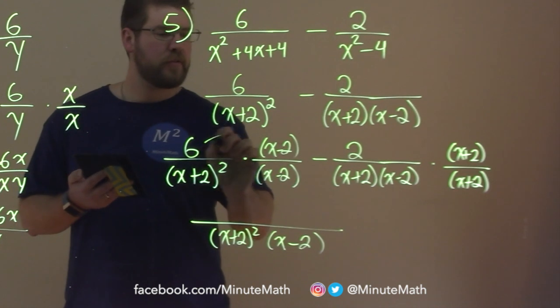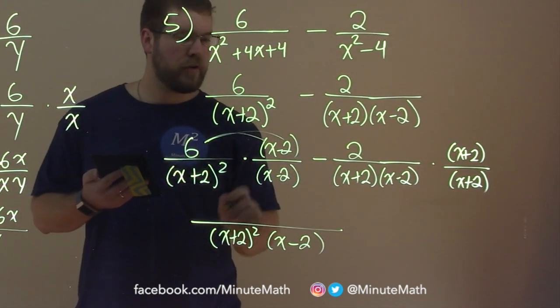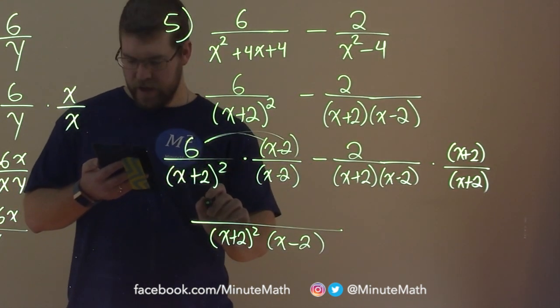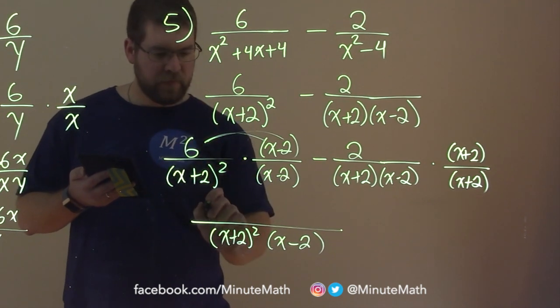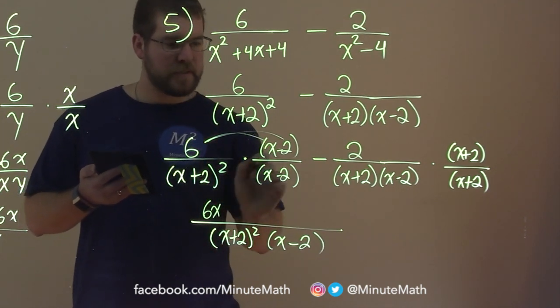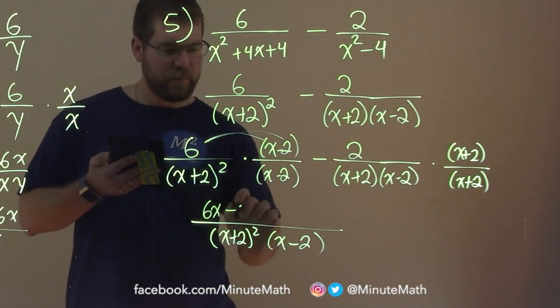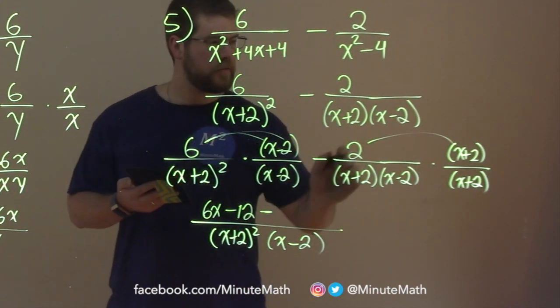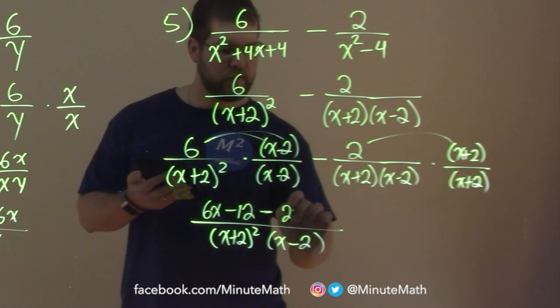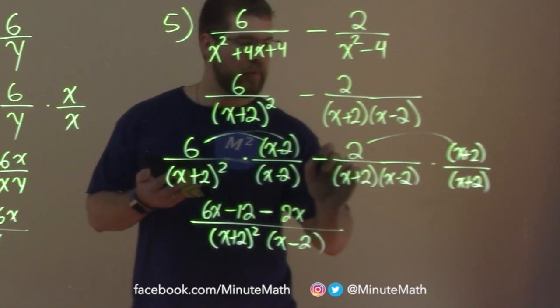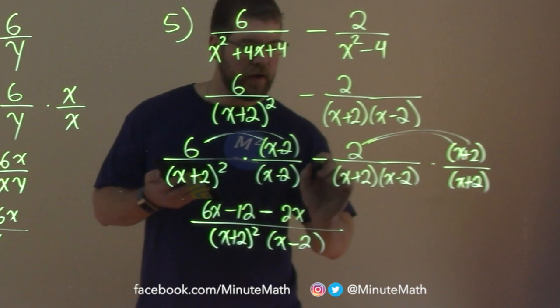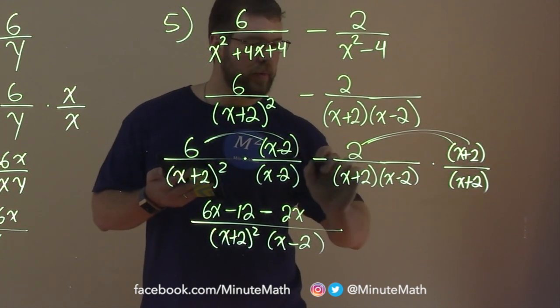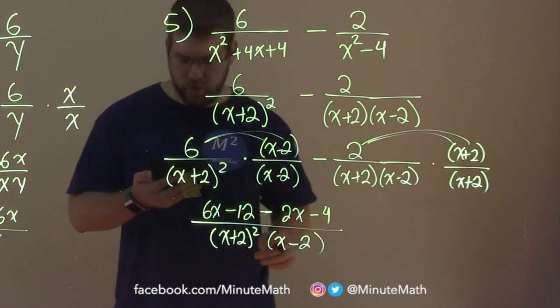So I'm going to put it here. And that's just x plus 2 squared times x minus 2. But the numerator, let's distribute this out before we do any subtraction here. 6x here. We have 6x. 6 times minus 2 is minus 12. Minus both parts. 2 times x is a 2x. And remember, we distribute that minus sign to both parts. So we have 2 times 2 is 4. But we subtract that. We have minus 4 here.